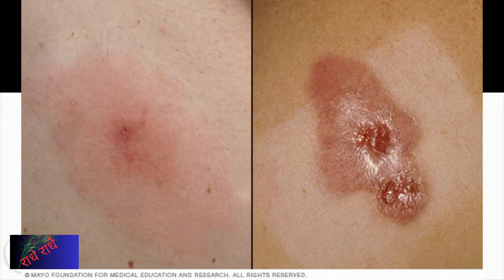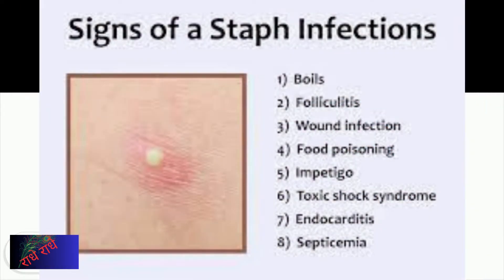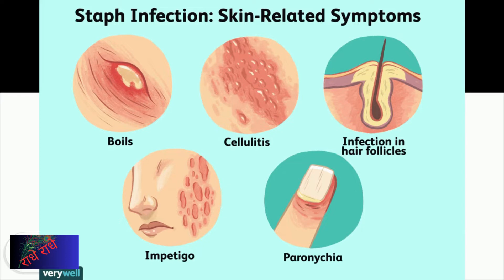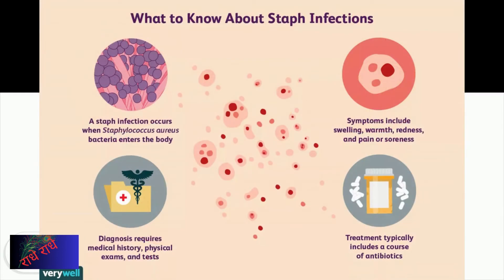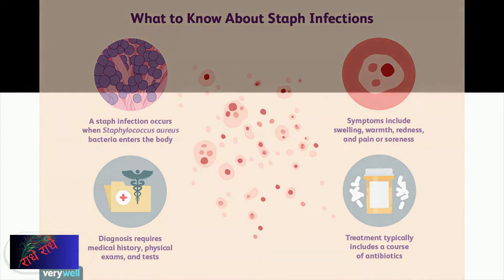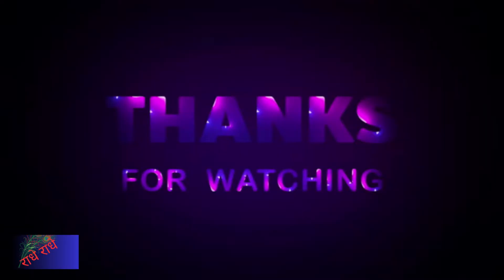Staphylococcal infections are a group of bacteria that can cause a wide variety of illnesses in humans. Symptoms and treatments vary depending on the type of infection. Common infections include boils, impetigo, and Staphylococcal scalded skin syndrome. Staphylococcal infections are often spread by direct contact with contaminated surfaces, or through contact with an infected person. Treatment of Staphylococcal infections usually involves antibiotics, and in some cases, drainage of the infection.